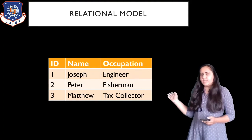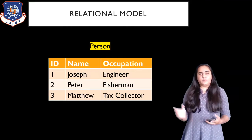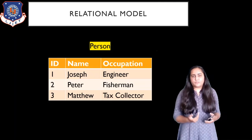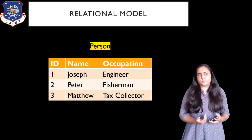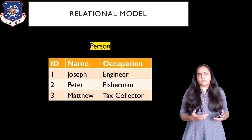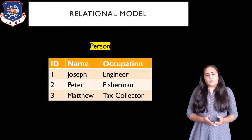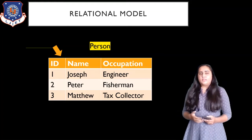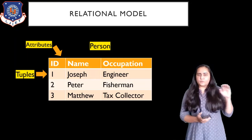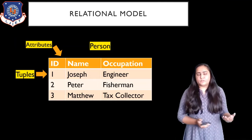Let me begin with an example. What you see here is a table — I would call it a relation because it's a relational model. I've named the table 'person' and it describes the ID, name, and occupation of a person. There are three people: Joseph, Peter, and Matthew, with occupations engineer, fisherman, and tax collector, and IDs one, two, and three. The columns ID, name, and occupation are called attributes, and all the rows are called tuples.